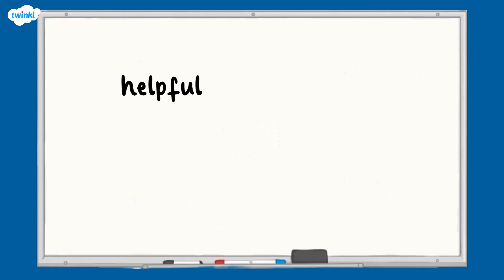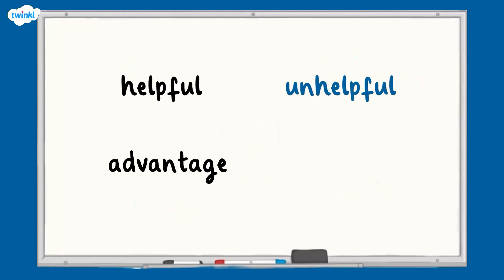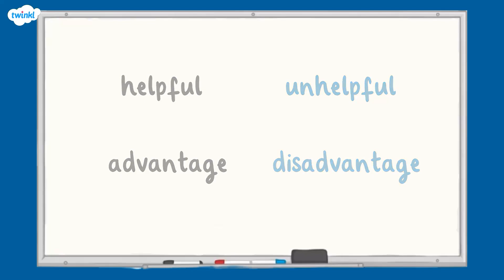Some words can have prefixes added to create their antonyms. For example, helpful which becomes unhelpful, and advantage which becomes disadvantage. The prefixes reverse the meaning of the words to form the antonym of the root word.